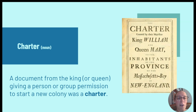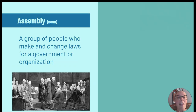The first word is charter — a document from the king or queen giving a person or group permission to start a new colony. The next word is assembly — a group of people who make and change laws for a government or organization. This is called an assembly.